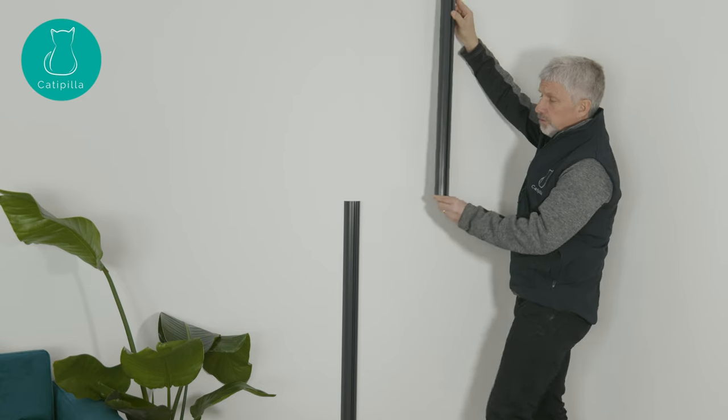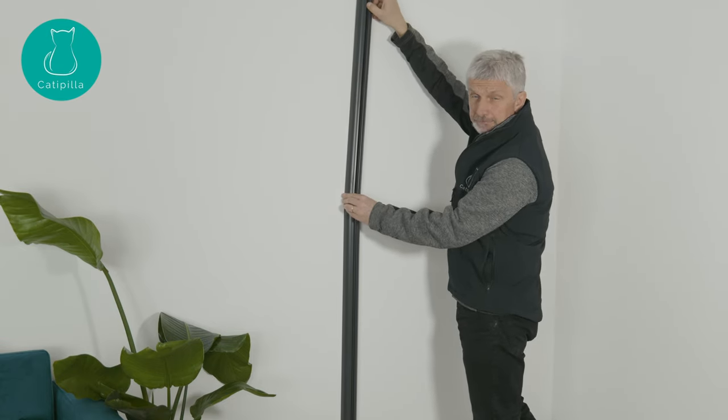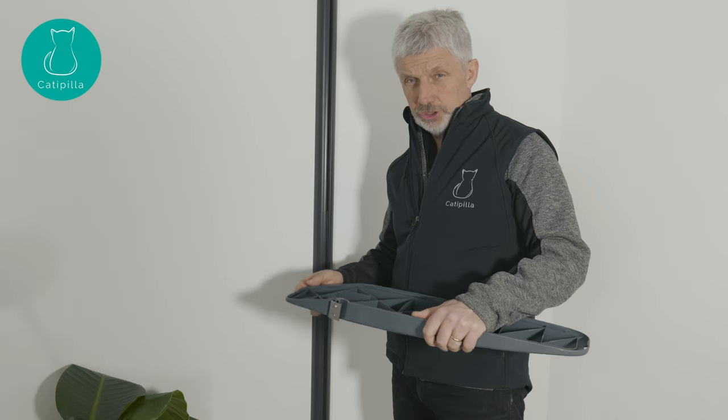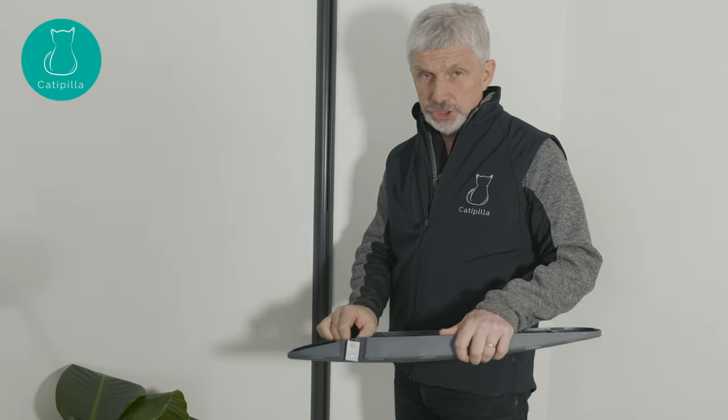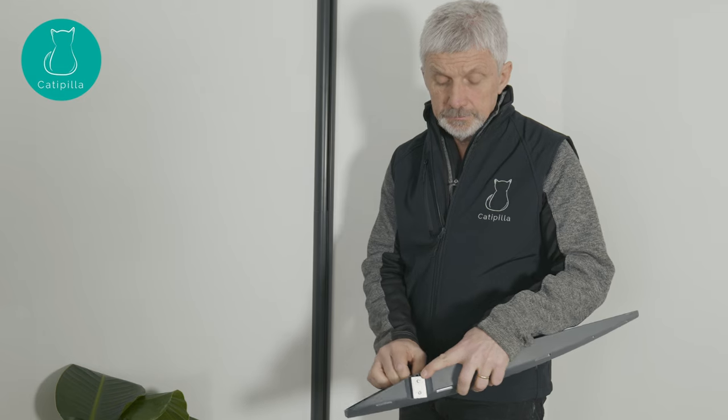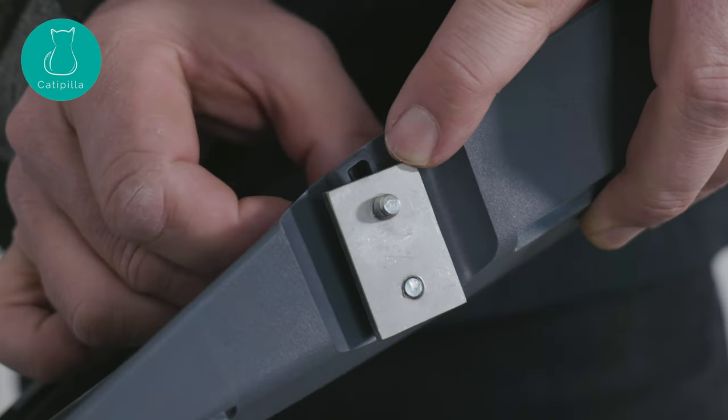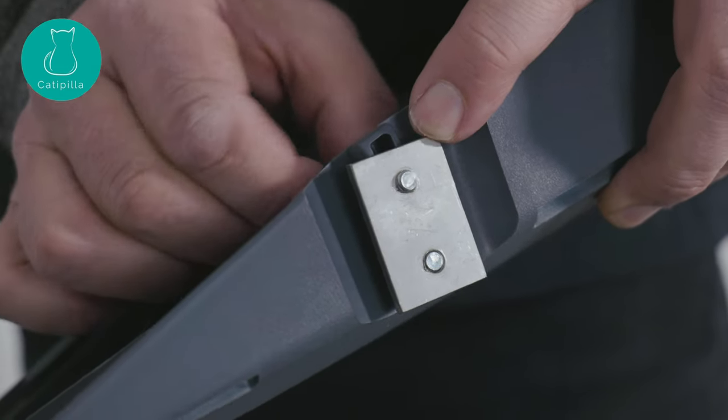Now take your tread plate and unscrew these little bolts here so the plate is right at the end of the bolt. That will make your life a lot easier when installing the plates onto the pillar.